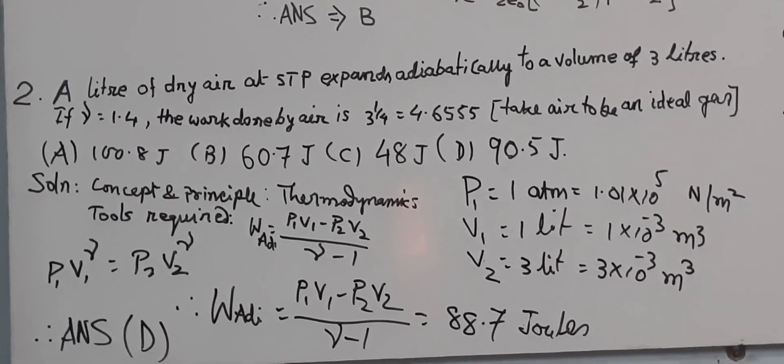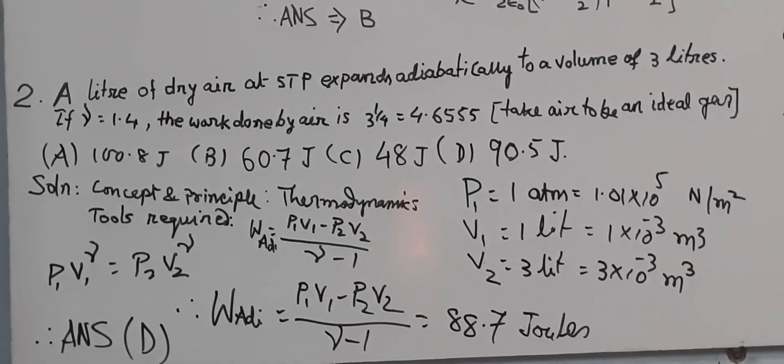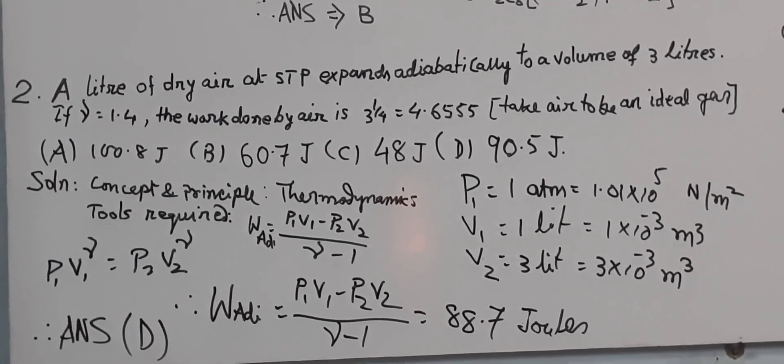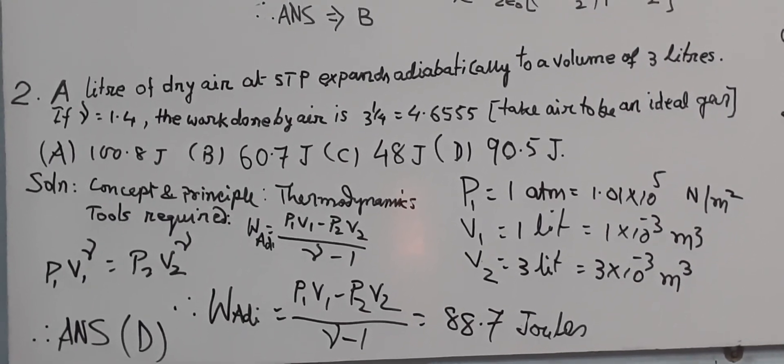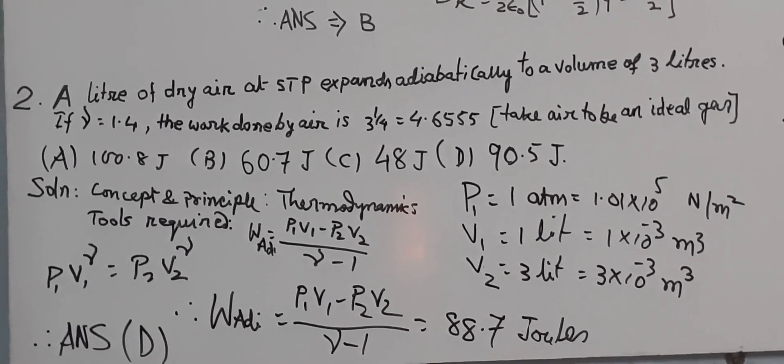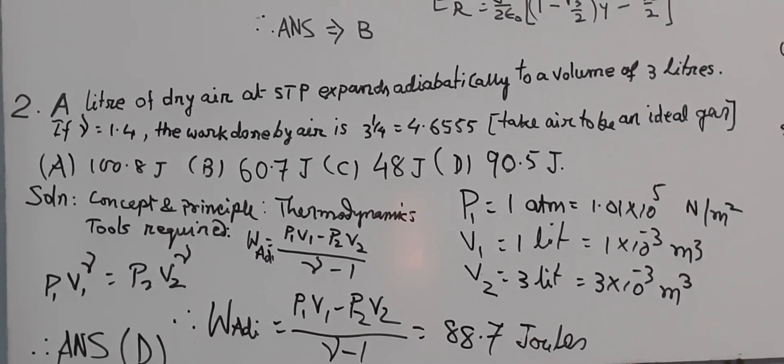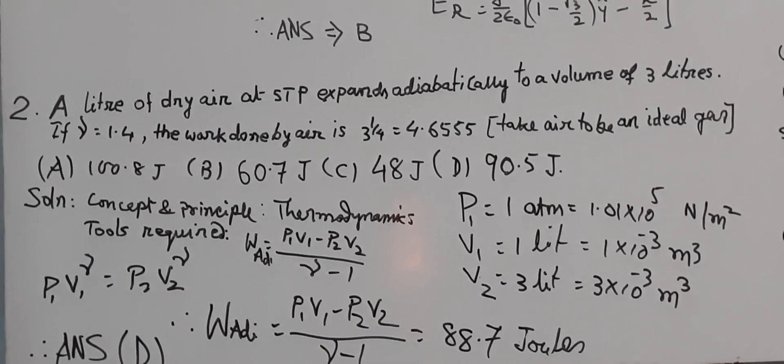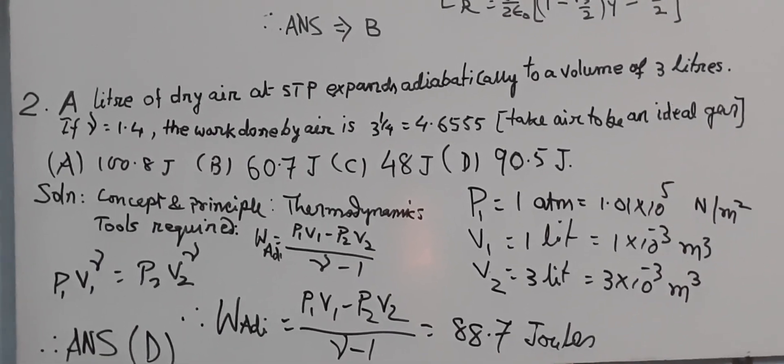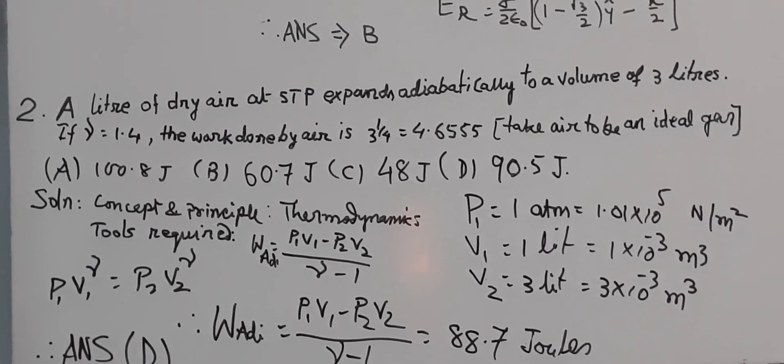All the given parameters are P1, V1 and V2, 1 atmosphere, 1 liter, and 3 liters. We have to find out P2, and in terms of SI units, then put it in the work done equation, and we will get work done will be 88.7 joules, and we can see it is matching with the close answer D. So, we will mark it.